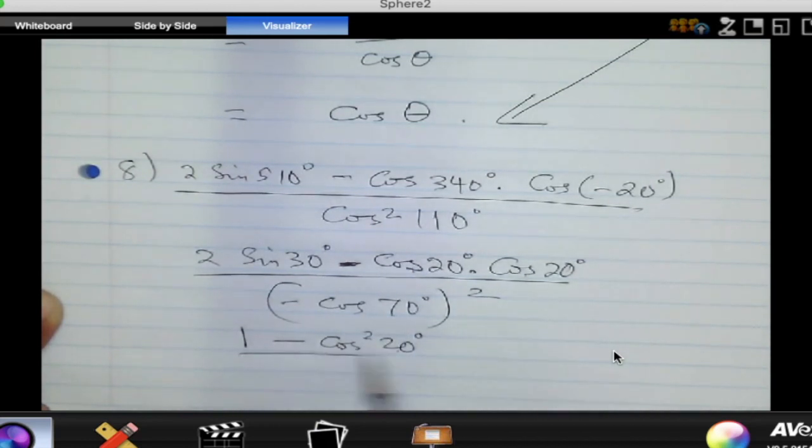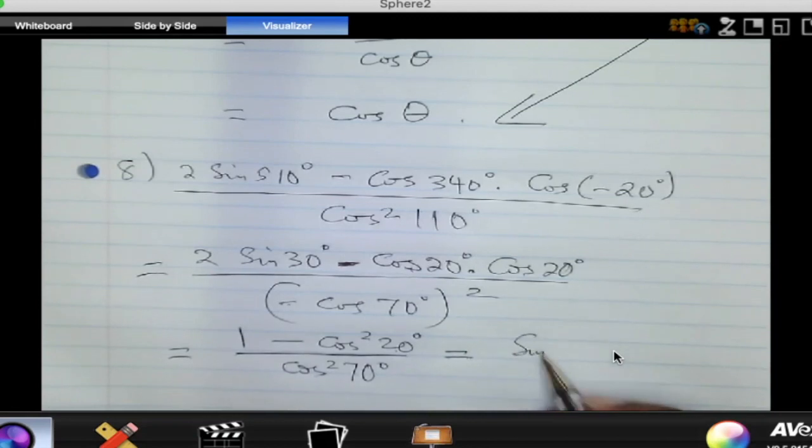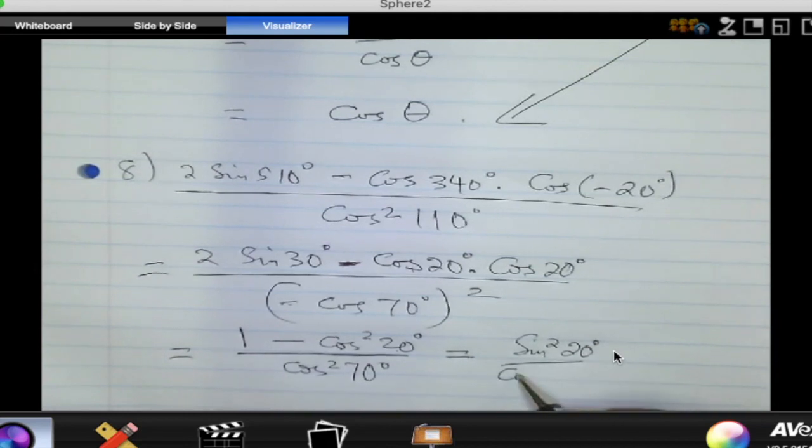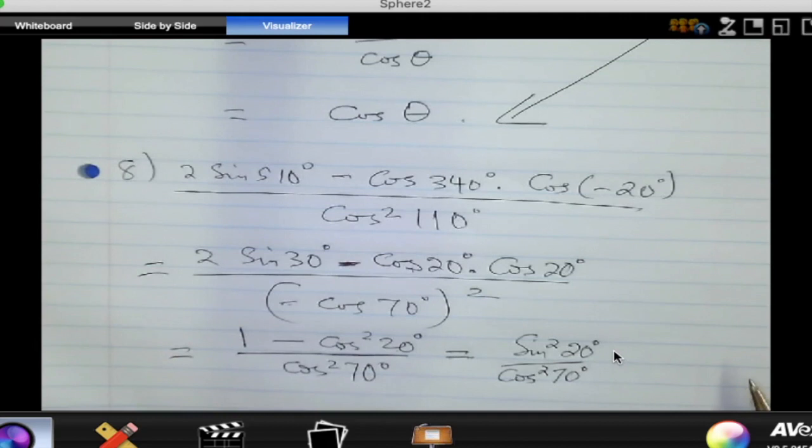Right. So, all this now is divided by the denominator here, the negative is squared. So, this will become cosine squared of 70. Okay. So, this is what we get. Right. But, is there an identity for 1 minus cosine squared of 20? Yes. So, this is sine squared of? That is sine squared of 20 degrees. But we are dividing by cosine squared of 70 degrees.